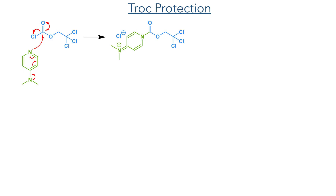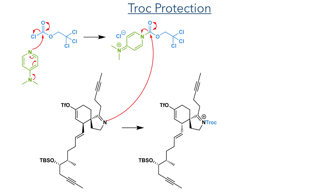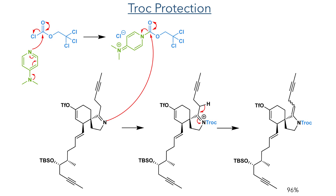While this compound could be reacted in the ring-closing alkyne metathesis, they found that the basicity of the amine nitrogen reduced the efficiency of the catalyst and necessitated high catalyst loadings. In order to avoid this, they first protected it with a Troc group. DMAP first reacts with Troc chloride, producing the activated ester that is then attacked by the amine nitrogen. The amide ion produced, now bearing the electron-withdrawing Troc group, undergoes an elimination reaction, generating the N-Troc enamine in a 96% yield.